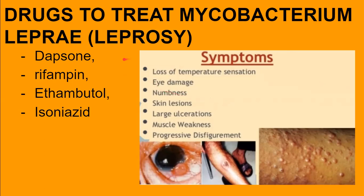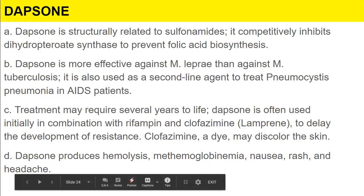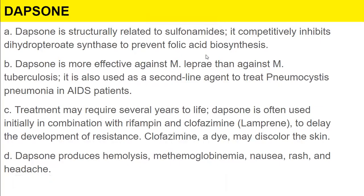Drugs used to treat leprosy include dapsone, rifampin, ethambutol, and isoniazid — all used for a longer period of time. Dapsone is structurally related to sulfonamides and inhibits dihydropteroate synthase to prevent folic acid biosynthesis. It is more effective against M. leprae than against M. tuberculosis. It is also used as a second-line agent to treat Pneumocystis pneumonia in HIV patients. Treatment may require several years to lifelong.